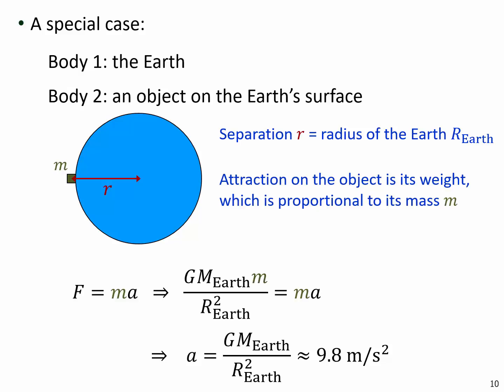Gravity is called uniform because the vertical distance change is very small, and also the horizontal distance change of any experiment we do is also very small. That's why all the forces, besides having the same magnitude, also always point in the same direction — that's what we call uniform gravity.